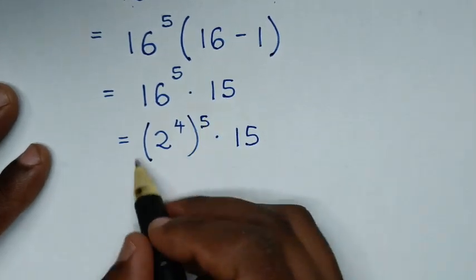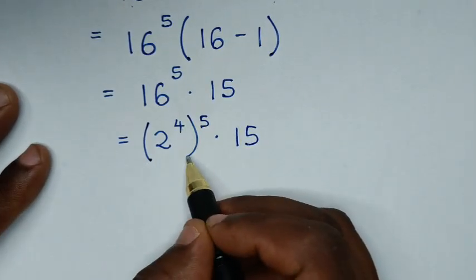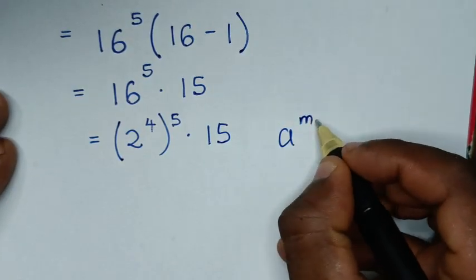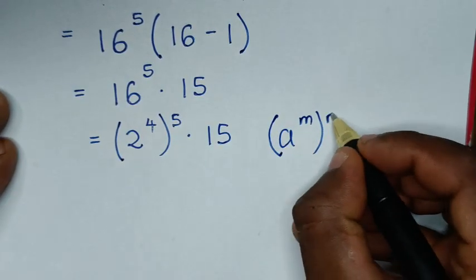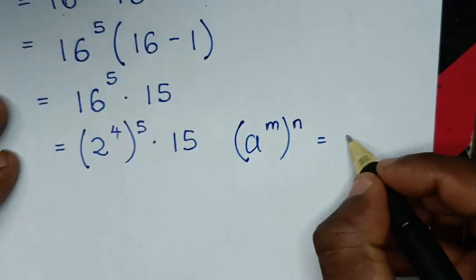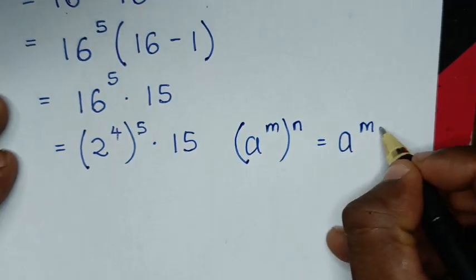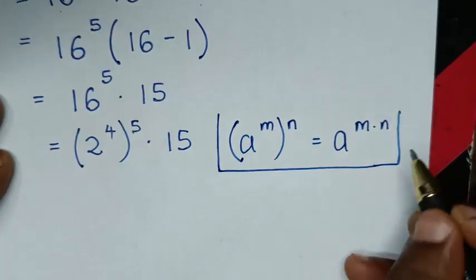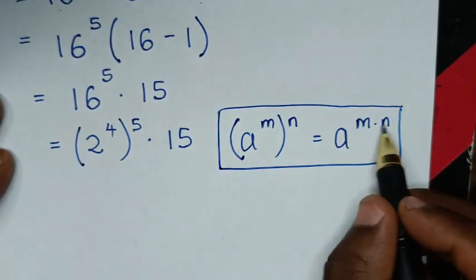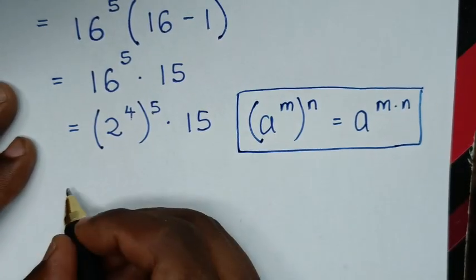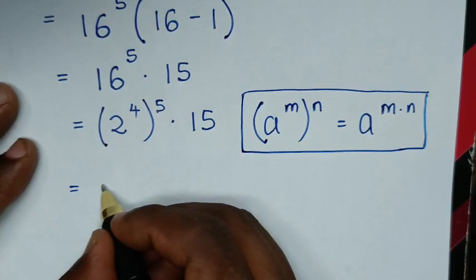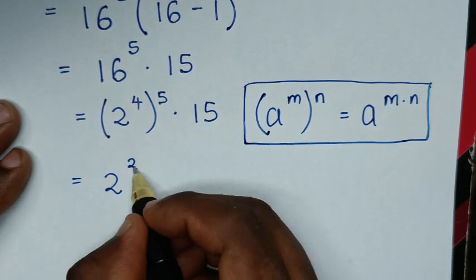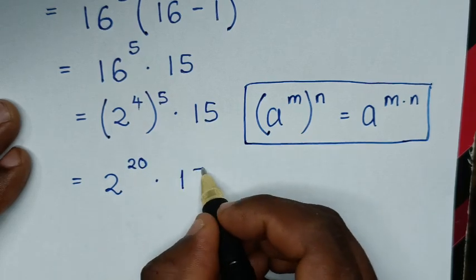This part is in the form of the rule a power of m bracket power of n, which is equal to a power of m times n. So we will apply this rule and multiply the powers: it will be equal to 2, then power of 4 times 5, which is power of 20, then times 15.